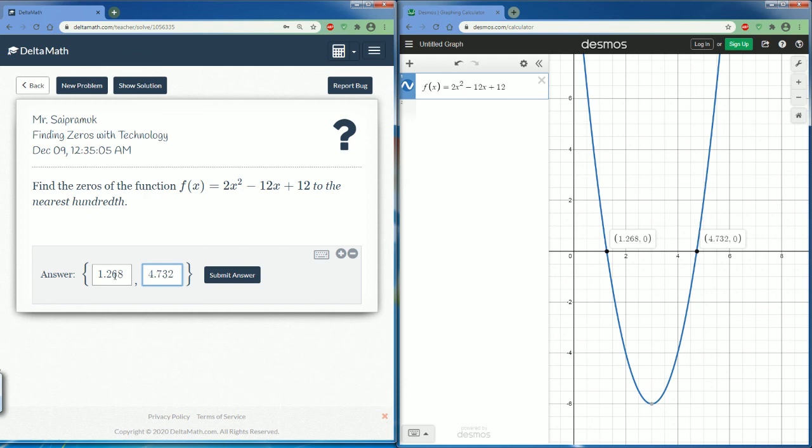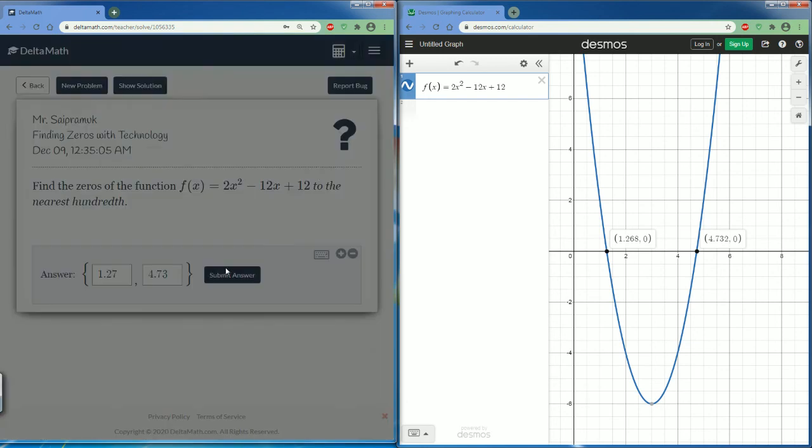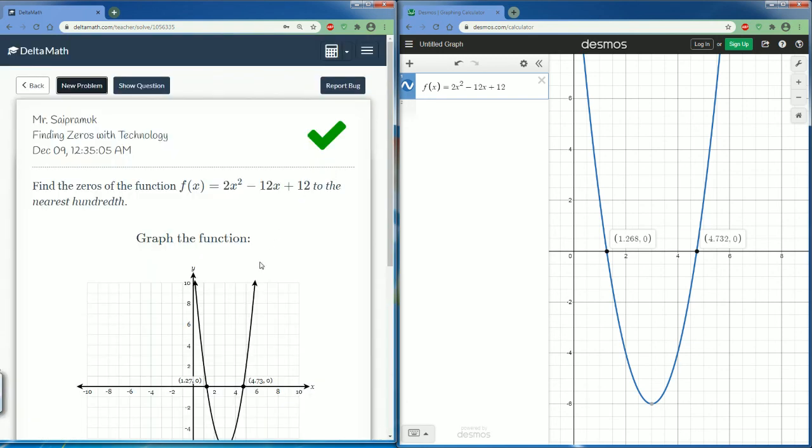Make sure we round it. So let's look at the last number. 0.268 is going to be rounded up. So the 6.8 is going to be a 7. Then the last one, 0.732. The number two means you can round it down. So it stays at 0.73. Submit your answer. There you go. So that is how you find zeros with technology.